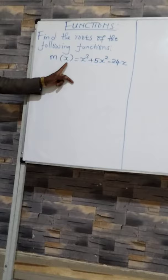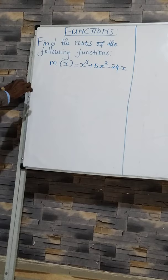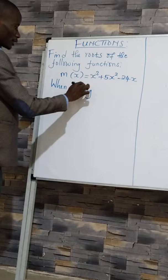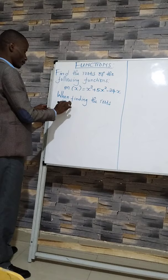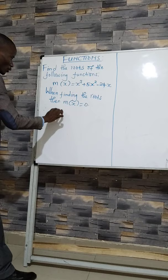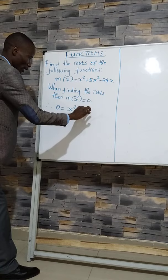Find the roots of the following function: m(x) = x³ + 5x² - 24x. When finding the roots, m(x) = 0. Therefore, where there is m(x), we replace with 0, giving us 0 = x³ + 5x² - 24x.